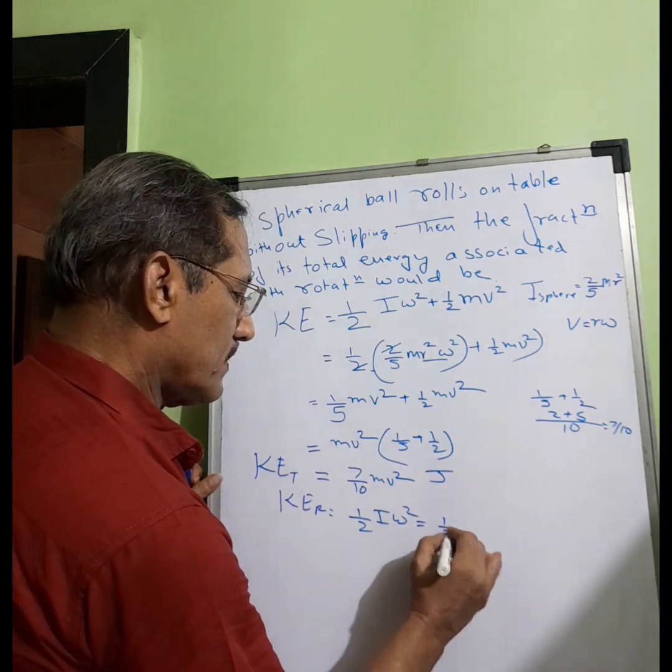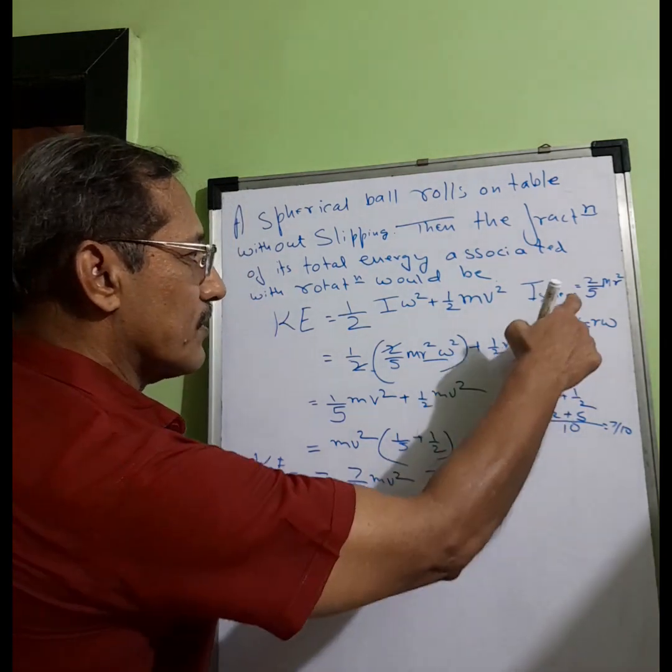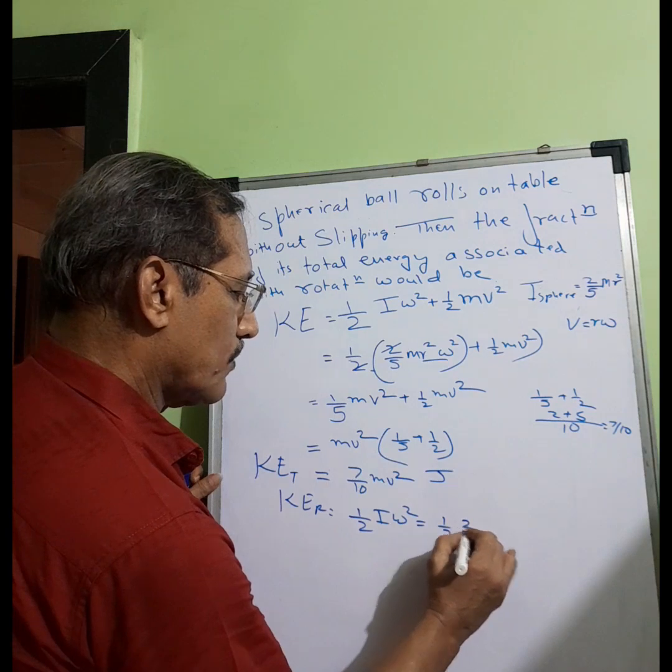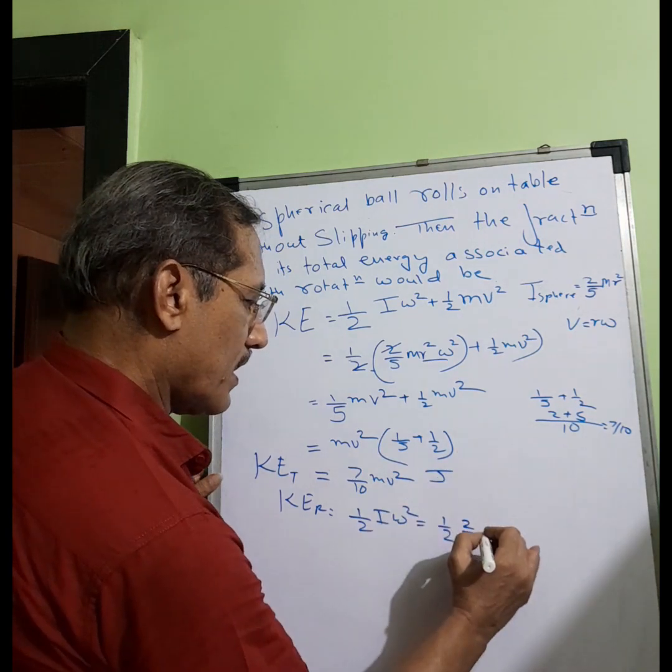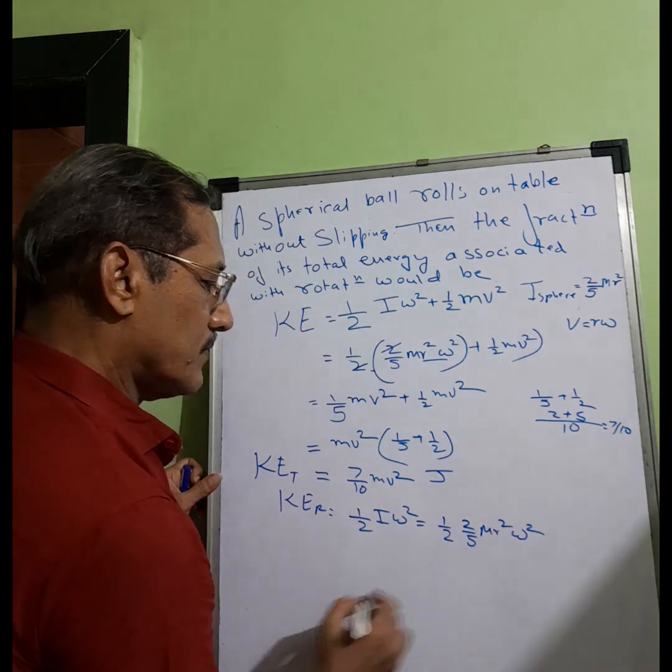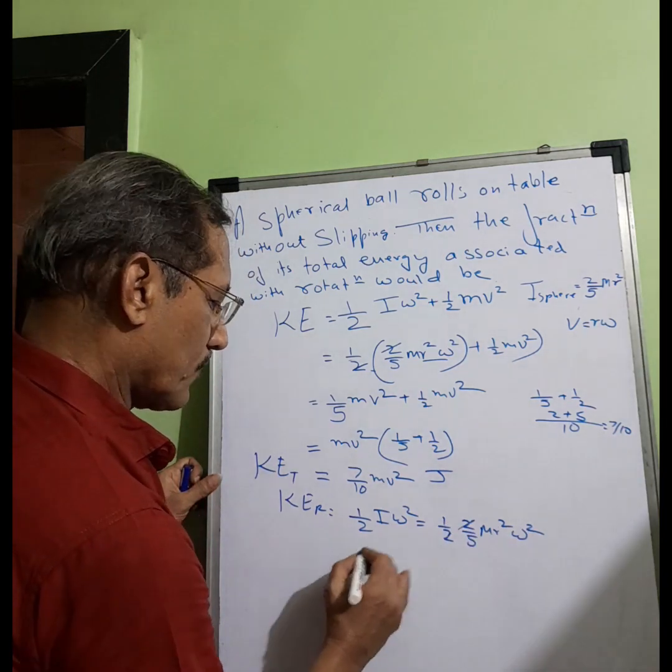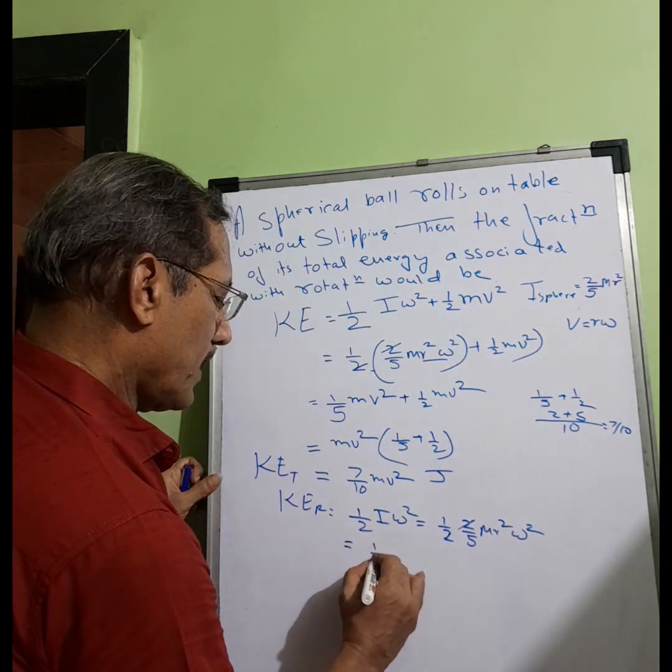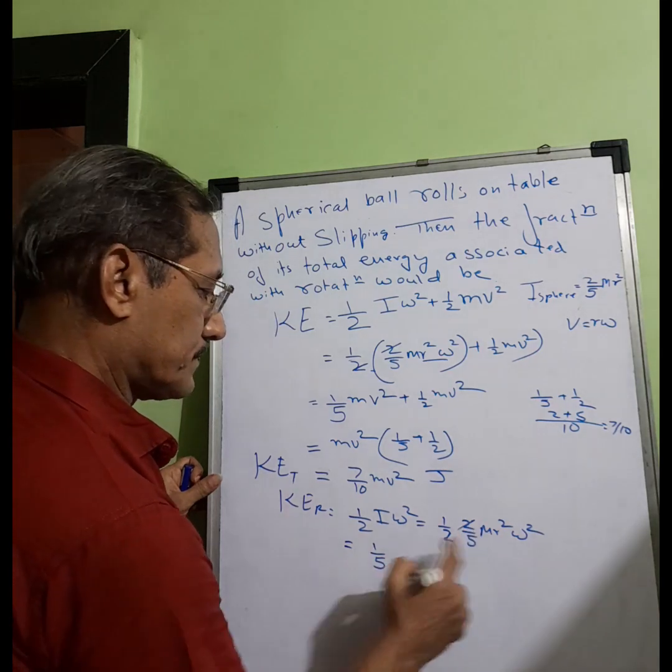We are redoing it anyways. 1/2, so I moment of inertia, we already found it is 2/5 mr² and omega². Right, so we cancel this and what we had got was 1/5. This we converted into v²: mv². So this is rotation.